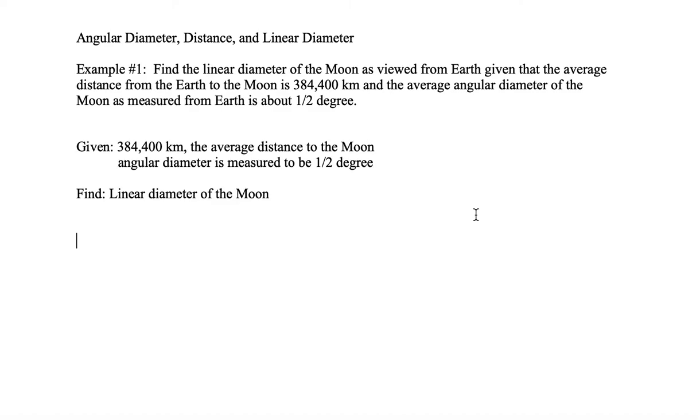The first quantity given is 384,400 kilometers which is the average distance to the Moon. The second quantity is an angular measure of half a degree which is the angular diameter. So somebody went outside and measured the angular diameter of the Moon and wrote it down as half a degree.